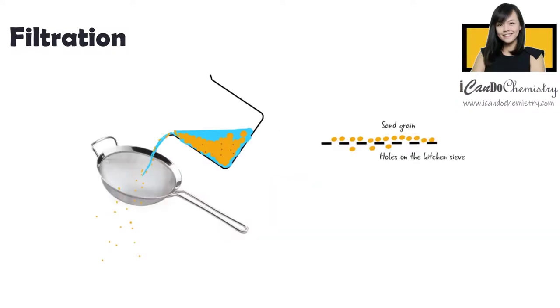However, the size of each sand grain is smaller than the holes of the kitchen sieve. If we pour the mixture, both sand and water will flow through the sieve. So what shall we do?